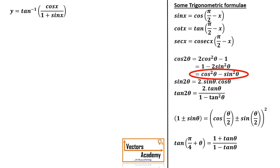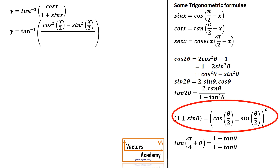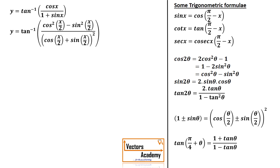Applying that formula in the numerator, I get tan inverse of cos²(x/2) minus sin²(x/2). The formula for 1 plus sin θ is also given below. Applying the formula, the denominator becomes (cos(x/2) plus sin(x/2)) whole squared. In the numerator, cos²(x/2) minus sin²(x/2) is a difference of squares form.